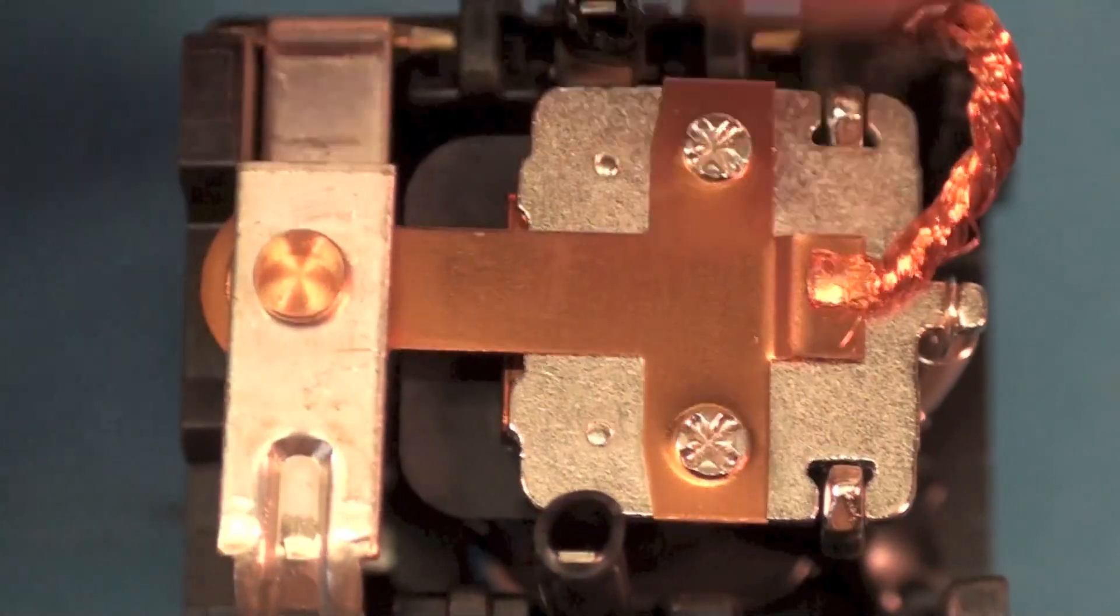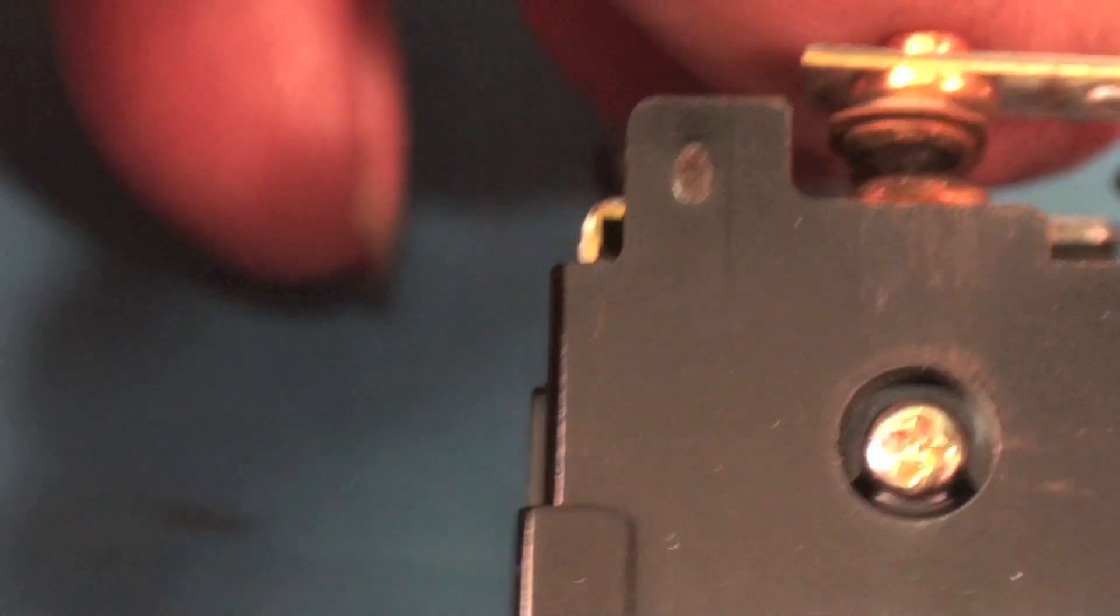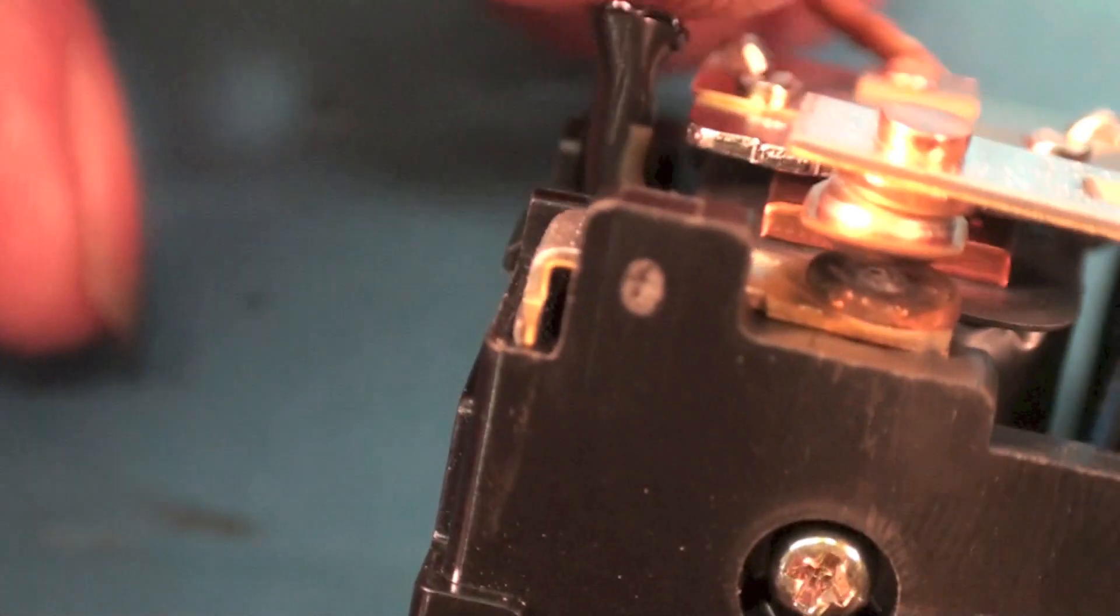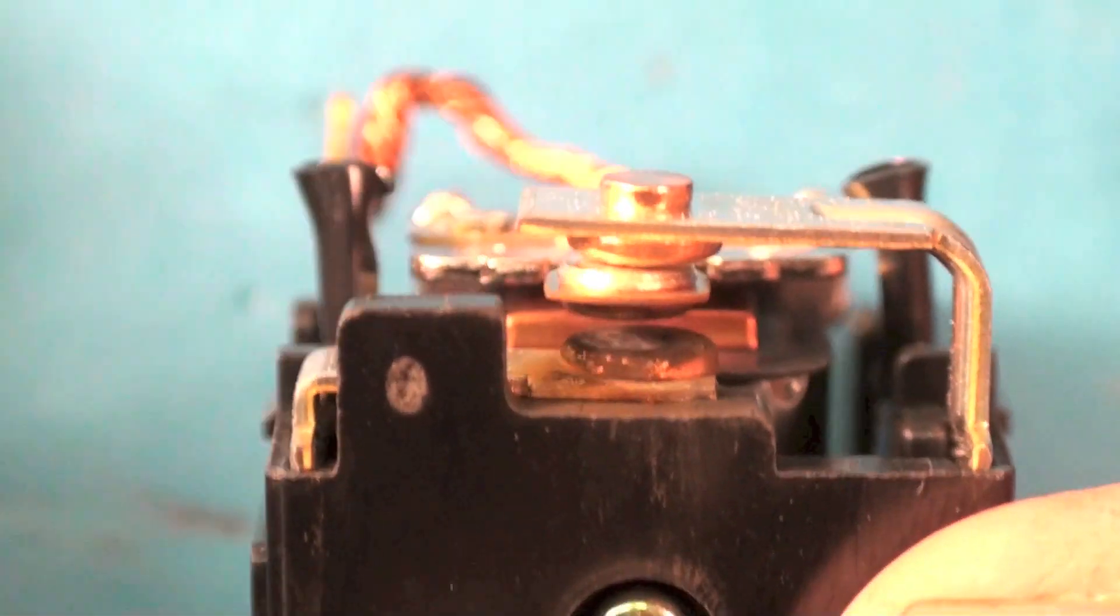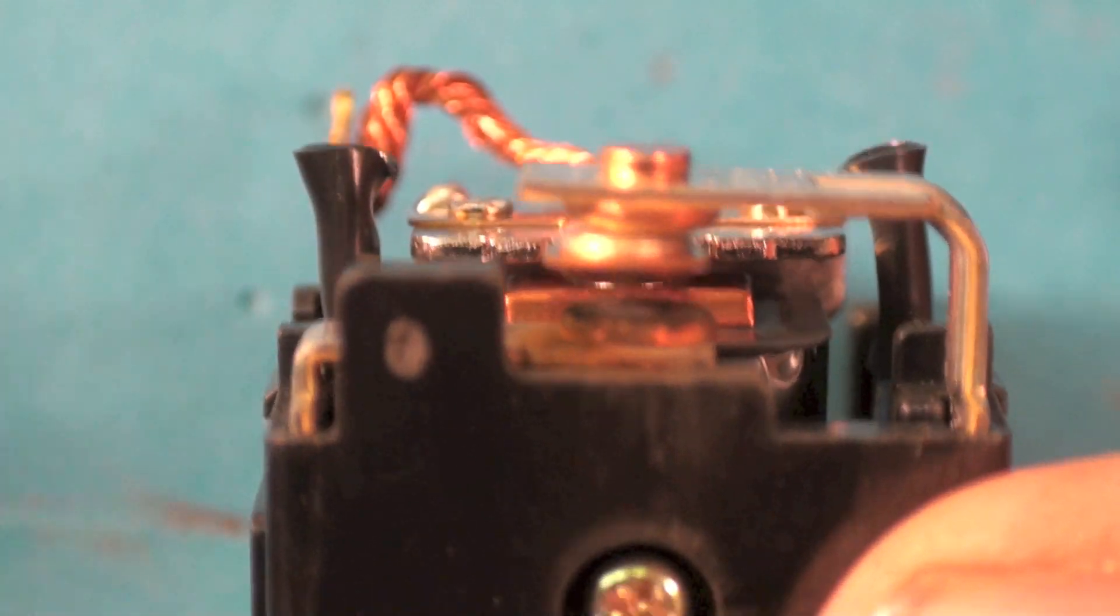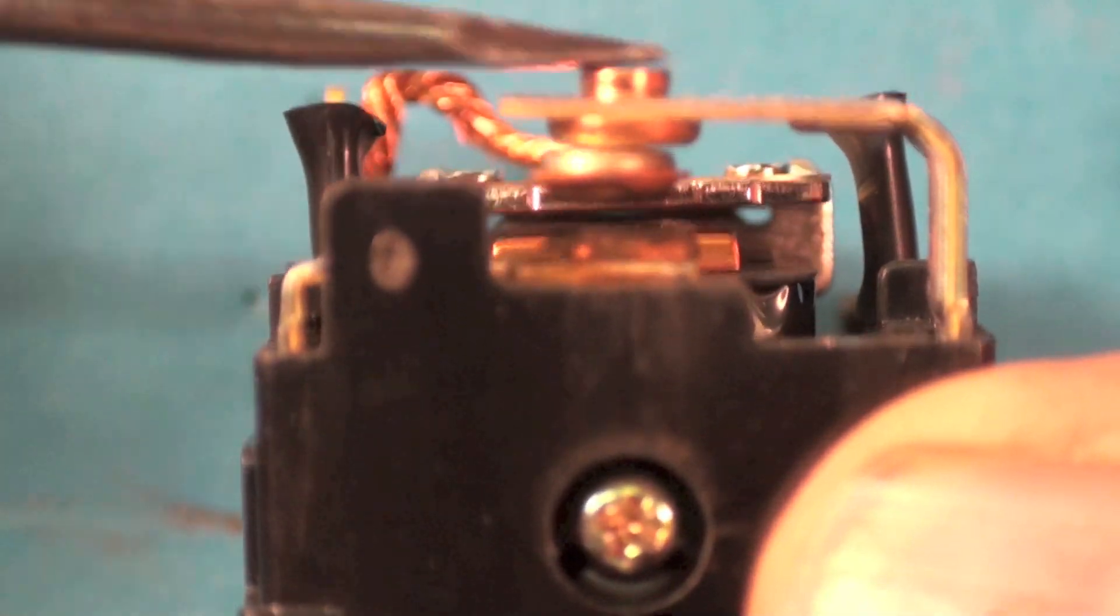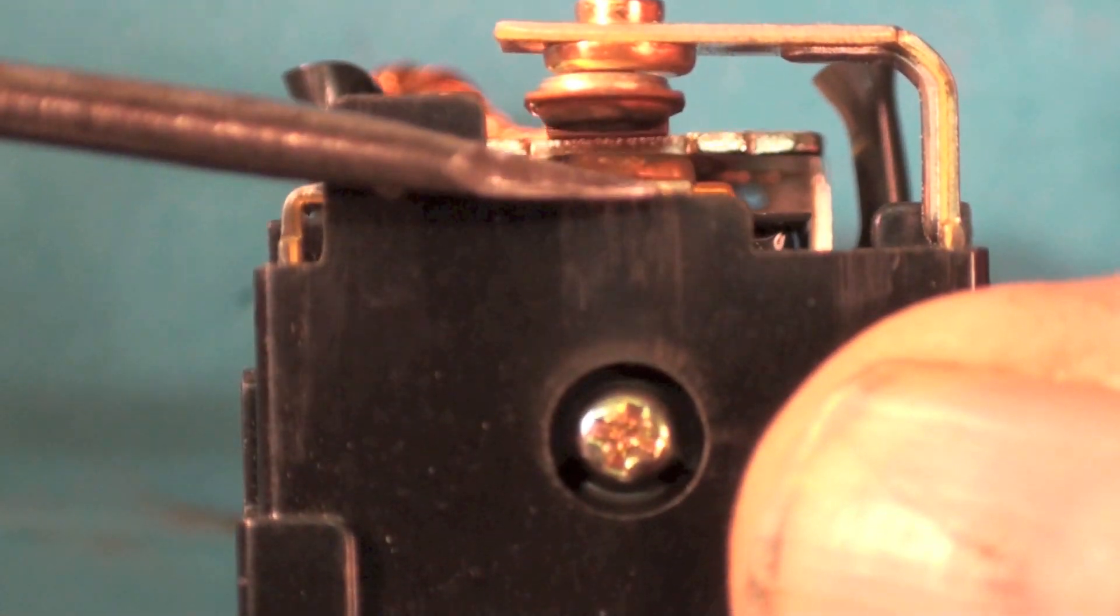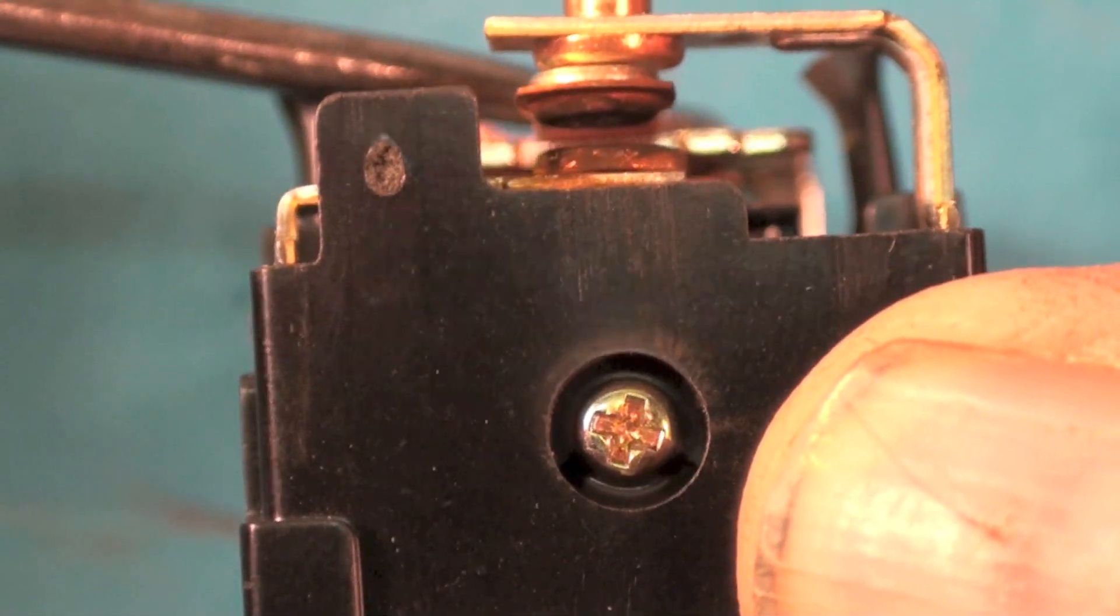Okay, coils right here. See the contacts right there. This moves down like this - it's normally closed and this one's normally open here. Pretty simple.